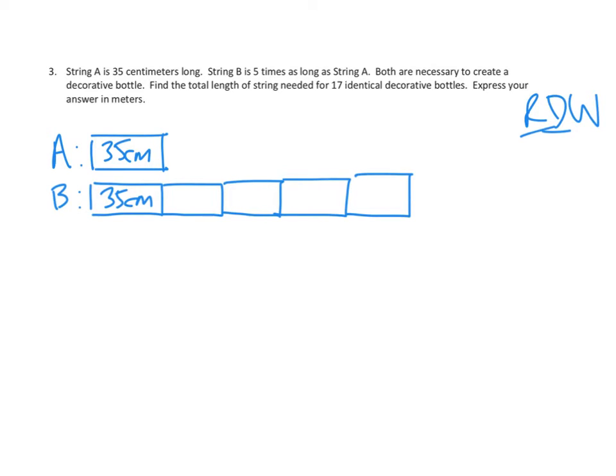Both are necessary to create a decorative bottle. So I'm going to do a bracket here and say the bottle is going to need both of those lengths of string. And then the question is, find the total length of string needed for 17 bottles. So whatever this length is, we're going to need to multiply times 17 to get the overall answer.